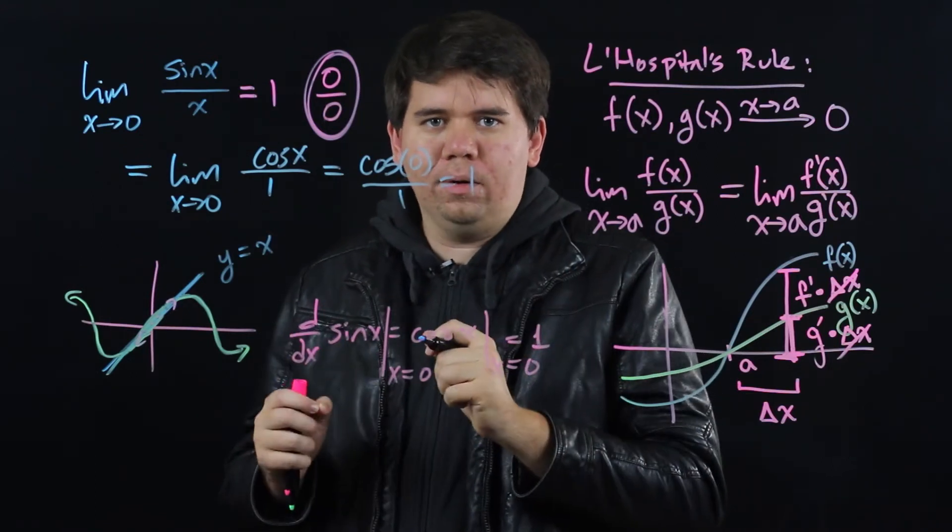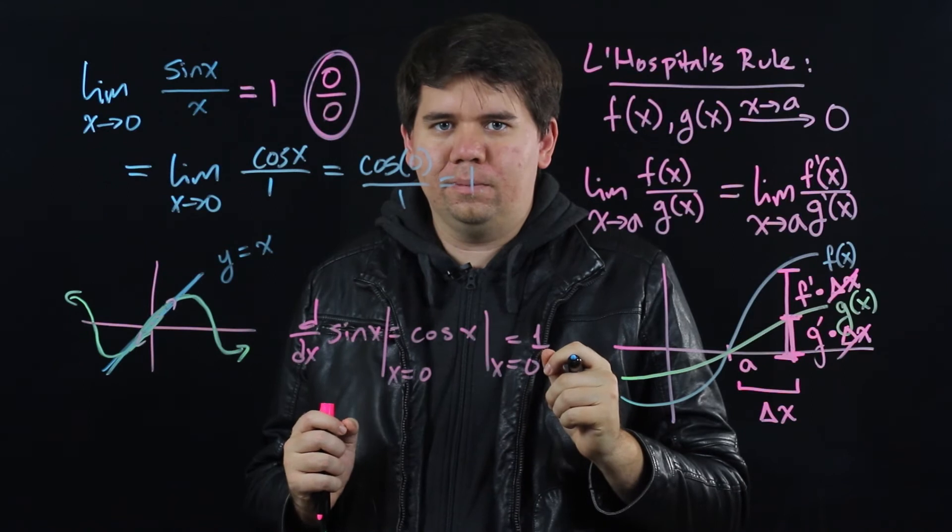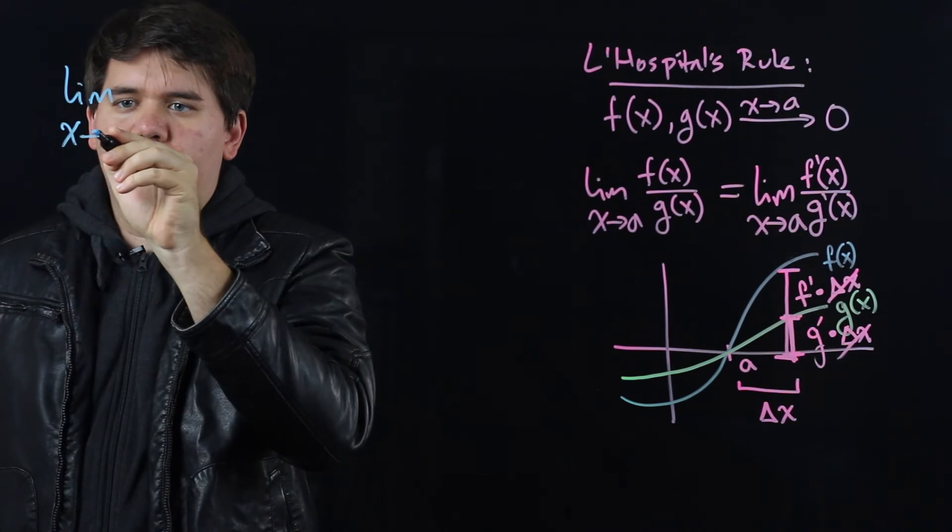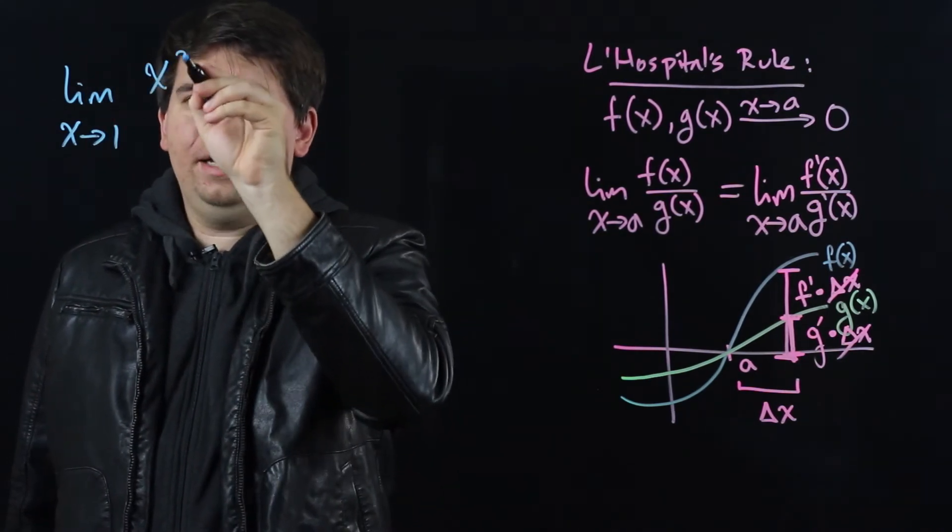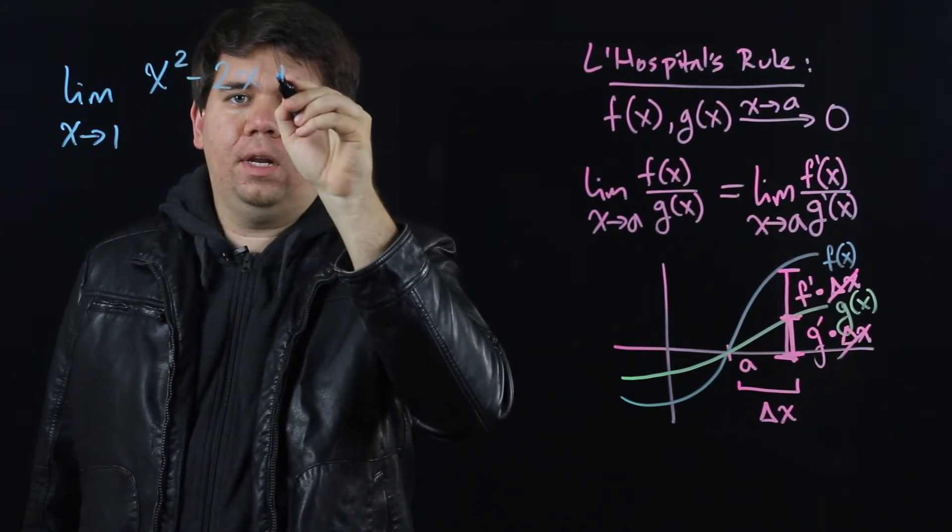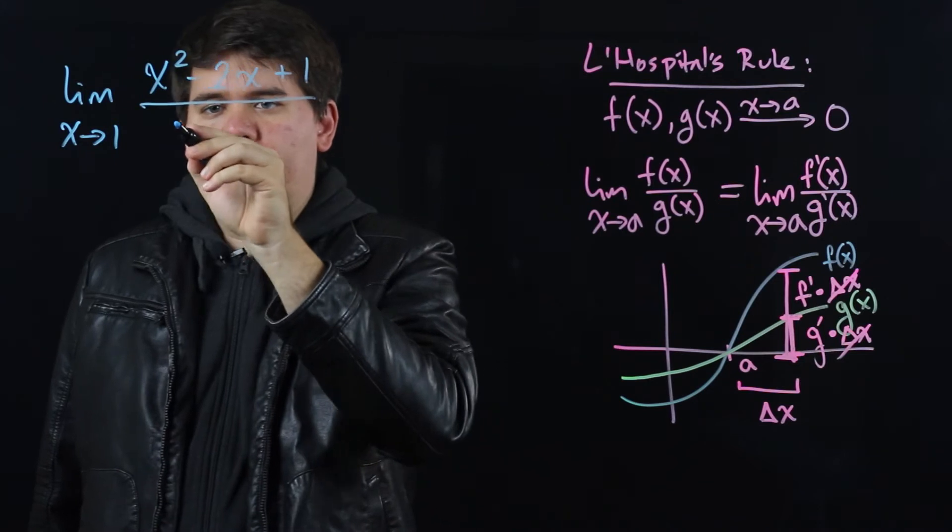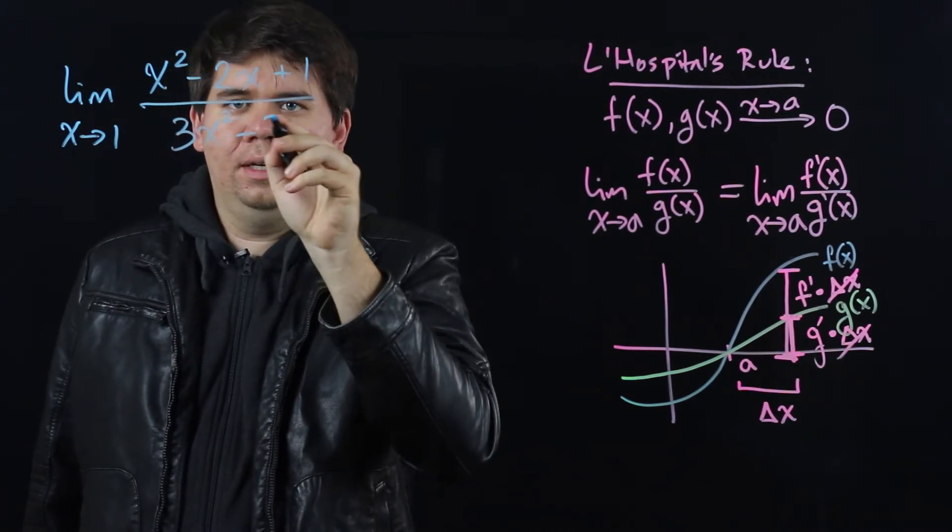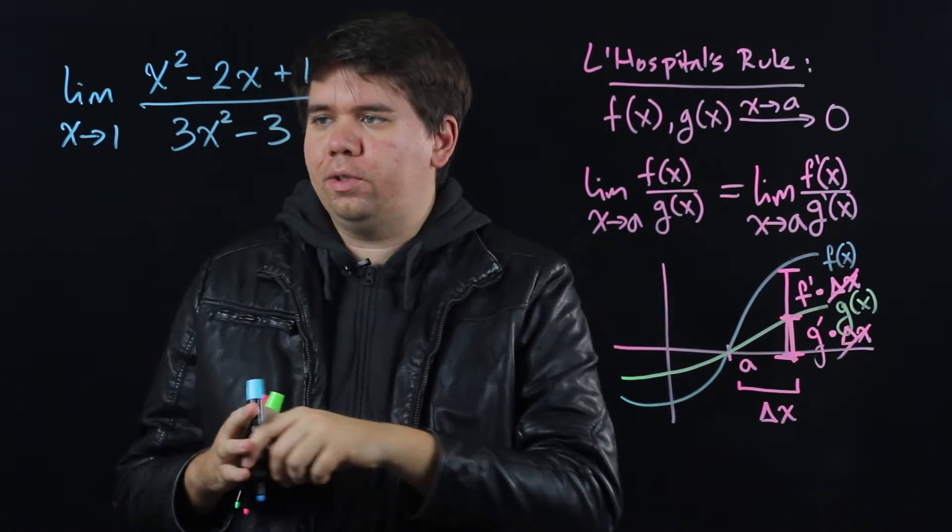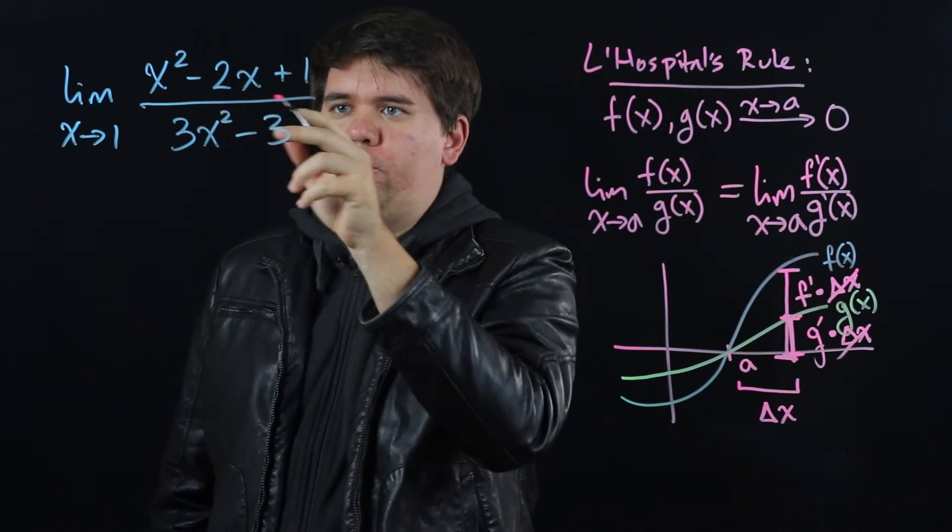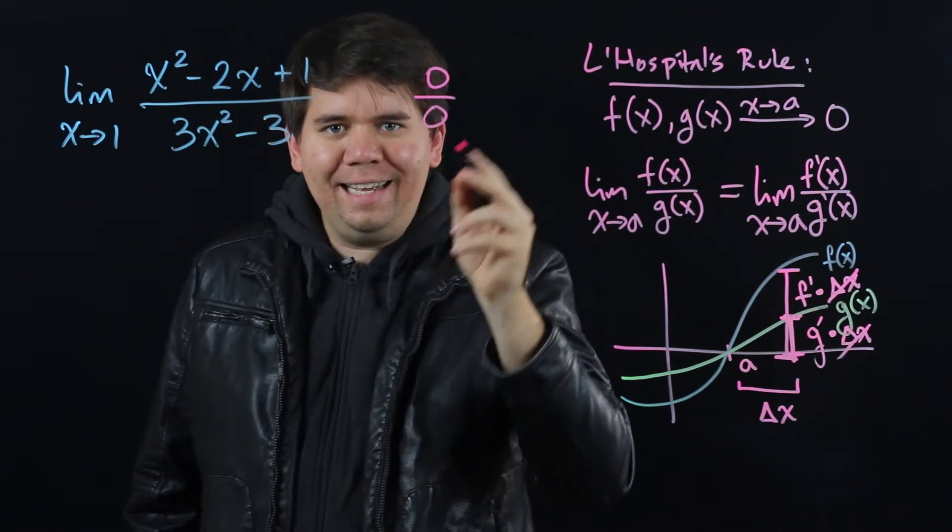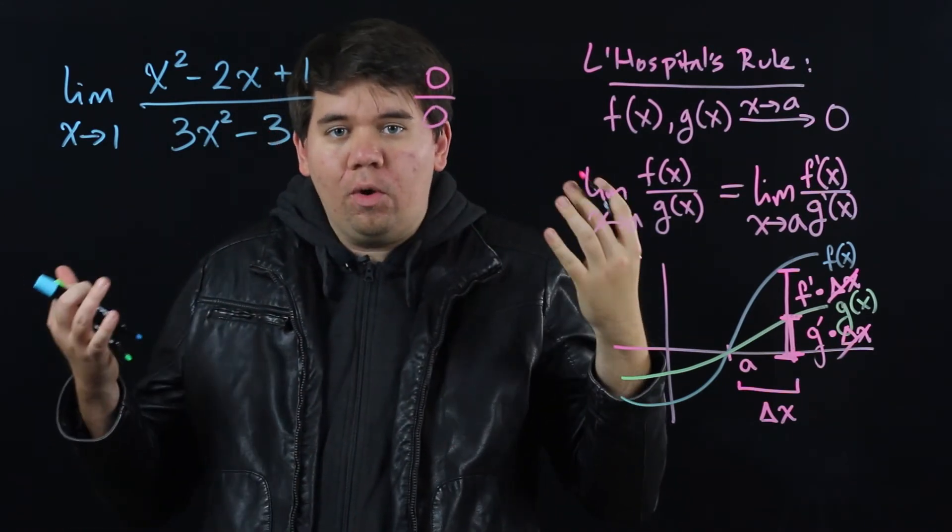Let's look at one more example of L'Hopital's rule in action. Consider the limit as x goes to 1 of x squared minus 2x plus 1, all over 3x squared minus 3. Now again, if you were just to take the limit as x goes to 1, notice on top you'd have 1 minus 2 plus 1—that's going to 0—and on bottom it's also going to 0. And so you get this indeterminate form 0 over 0; we don't know where that's going to go to.